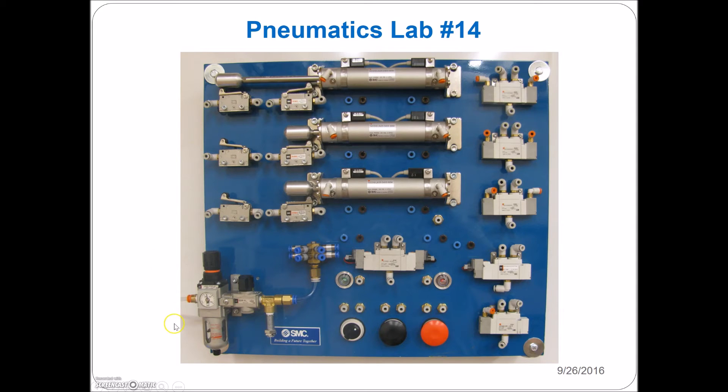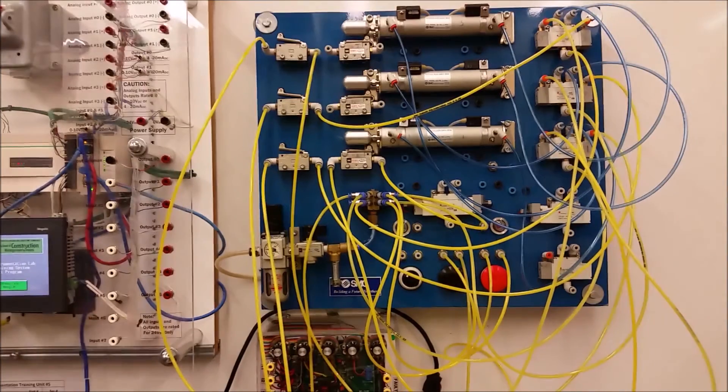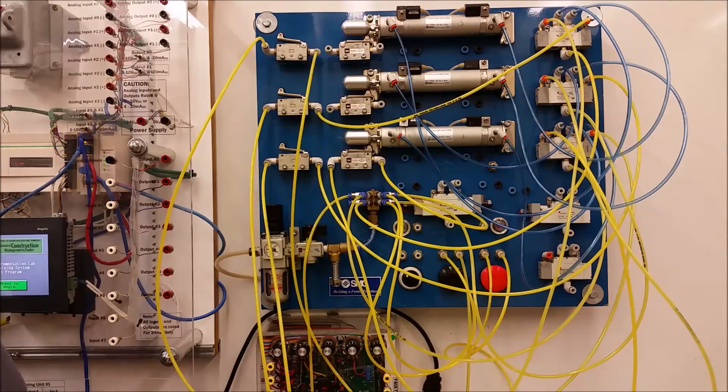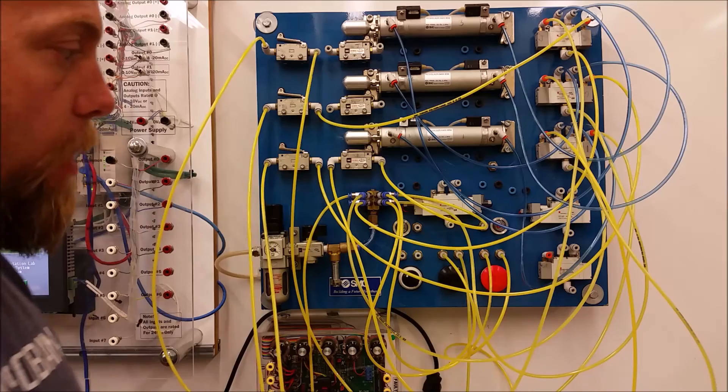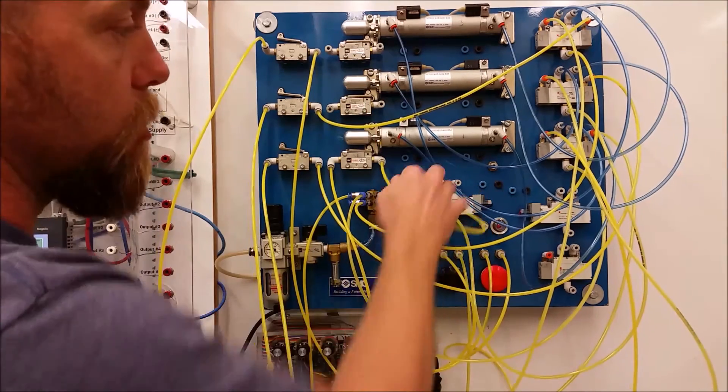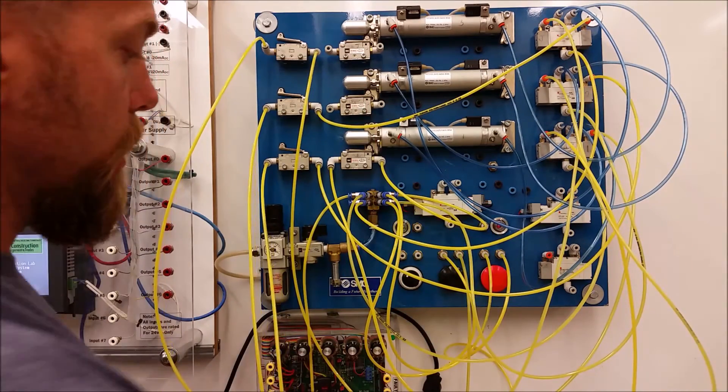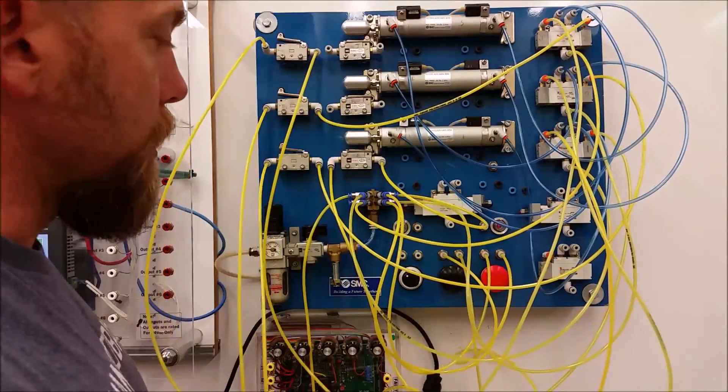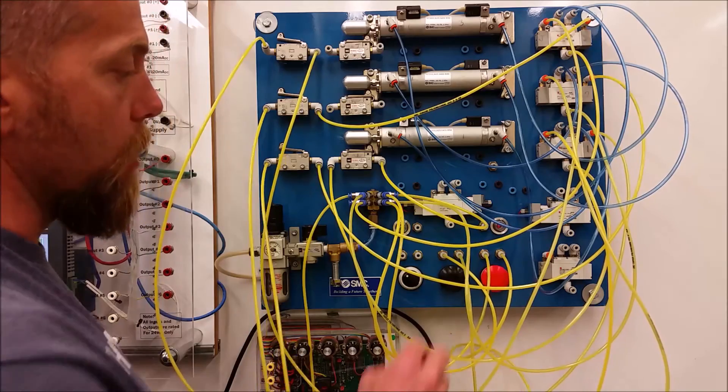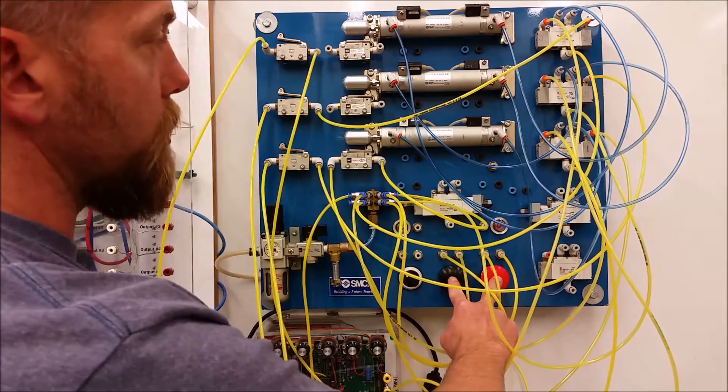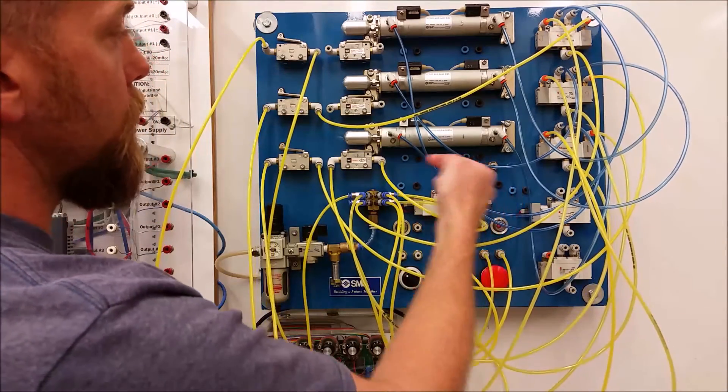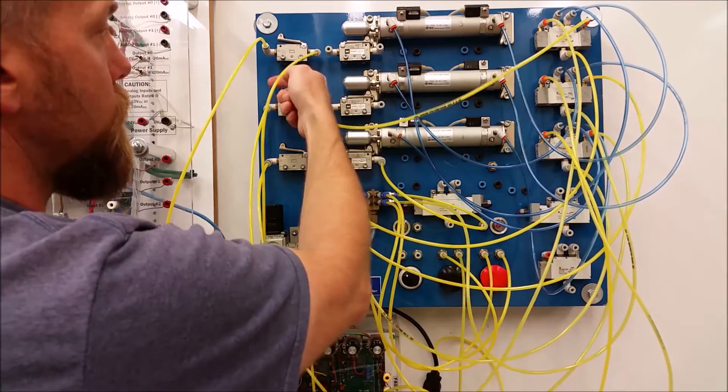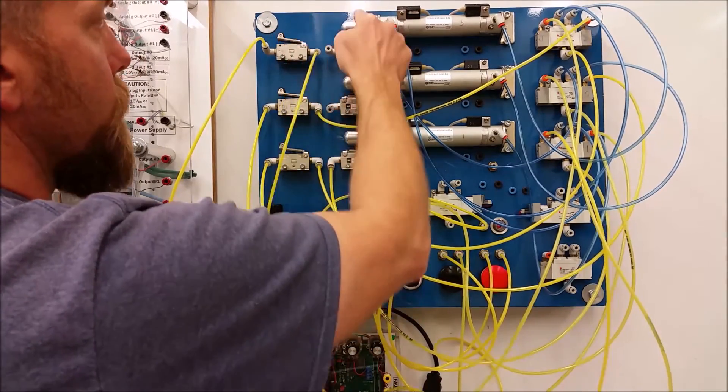Alright guys, this one's lab number 14, looks crazy, looks crazy because we've got all these lengths of tubing that we haven't cut, right? So we've got stuff absolutely all over the map. Don't worry about what it looks like. The sequencing here is that we're going to press both push buttons and they're going to sequence 1, then 2, then 3.